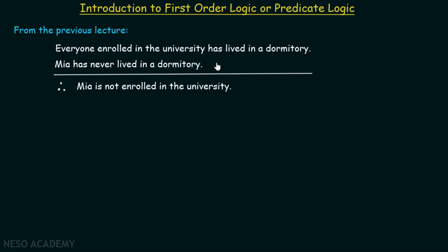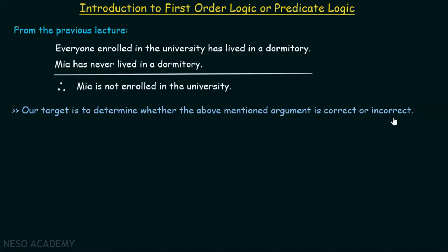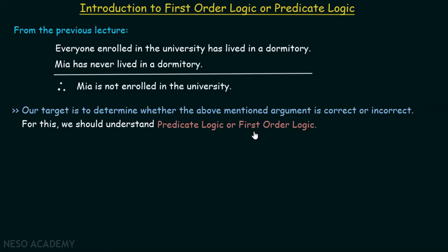These type of arguments could not be handled by the rules of propositional logic. That is why we will go one step further — we will identify the validity of these type of arguments using first order logic. Our target is to determine whether the above mentioned argument is correct or incorrect. This is the primary target.